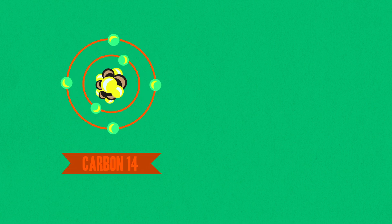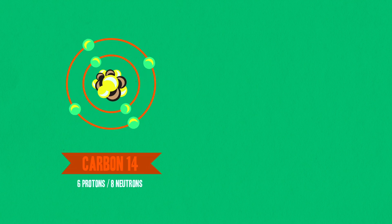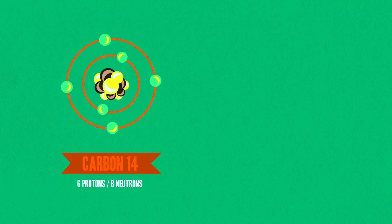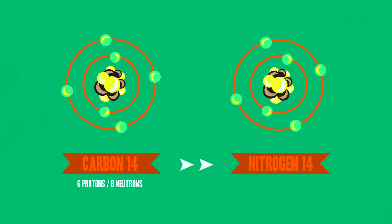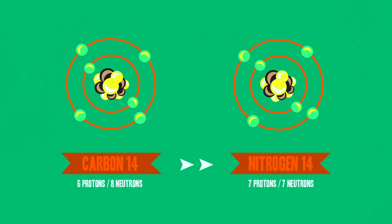If this was a carbon-14 atom, with six protons and eight neutrons, through the weak force, it just decayed into a nitrogen-14 atom, with seven protons and seven neutrons. And that actually happens — it happens all the time. And it's how carbon-14 dating works. The weak force is actually able to change the identity of particles when they come very, very close to each other.